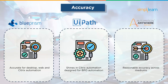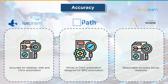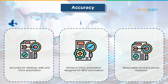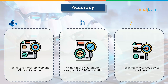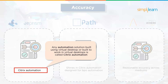Next up we have Accuracy. Blue Prism is accurate for desktop, web and Citrix automation. UiPath shines in Citrix automation and is designed for BPO automation. Automation Anywhere delivers reasonable accuracy across different mediums. Any automation solution built to work in virtual desktops is called Citrix automation.